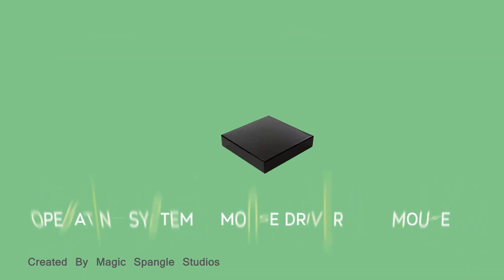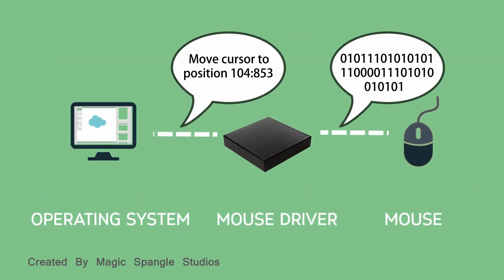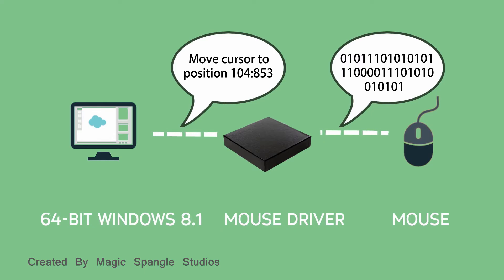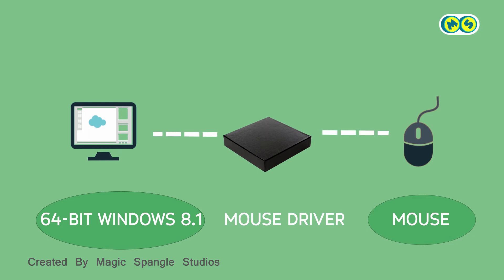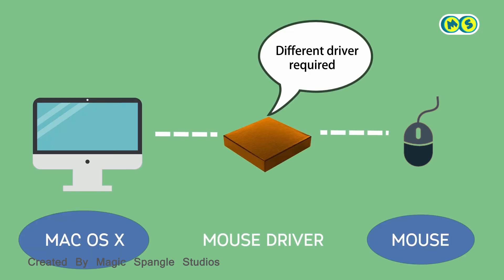A device driver is a software-based translator that allows different operating systems and different devices to communicate. Each device driver translates for only one operating system and one device. For example, the device drivers for a 64-bit Windows 8.1 system are different from the device drivers for any other operating system.